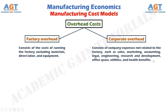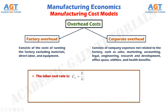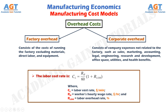The issue of overhead costs can become quite complicated. Our approach in this course is simply to include an appropriate overhead expense in our labor and equipment cost rates. For example, the labor cost rate is: CL equals RH divided by 60, multiplied by (1 plus RLOH), where CL represents labor cost rate in dollars per minute, RH represents the worker's hourly wage rate in dollars per hour, and RLOH represents the labor overhead rate expressed as a percentage.